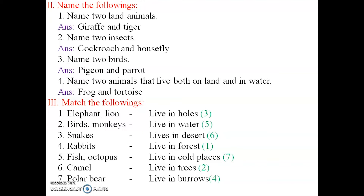Name two animals that live both on land and in water. Any two such animals — for example, frog, salamander, or tortoise. Here I have given frog and tortoise. F-R-O-G, frog. T-O-R-T-O-I-S-E, tortoise.